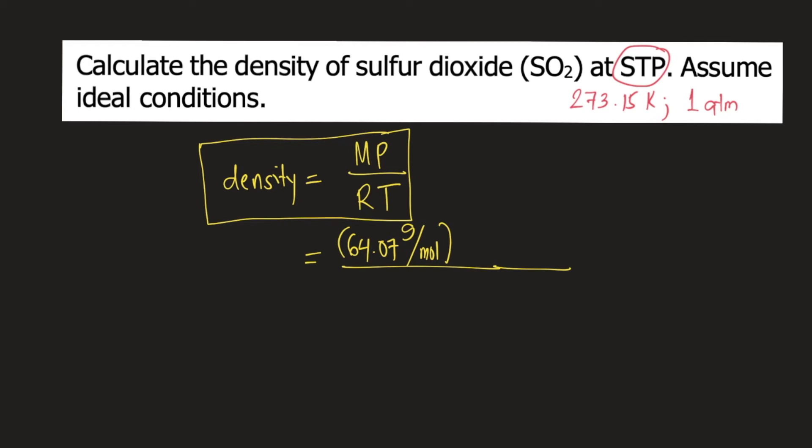P is pressure. So our pressure is the standard pressure, 1 atm. R is the gas constant. We know the value is 0.0821 liter atmosphere per mole Kelvin.